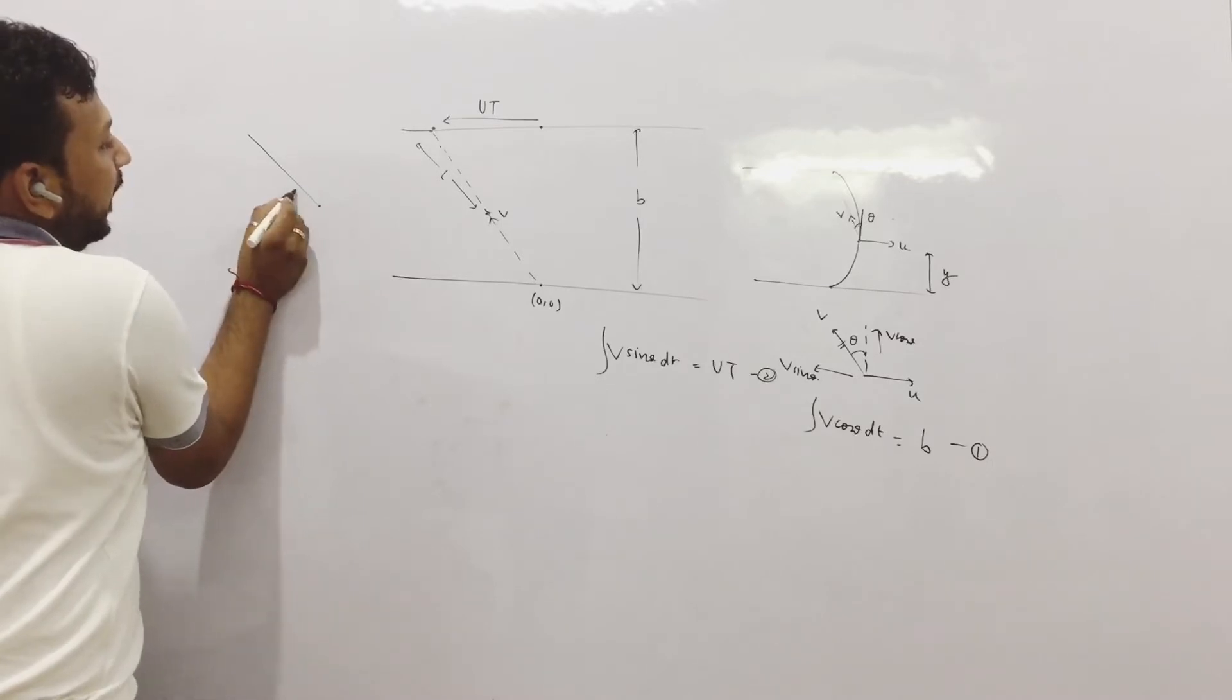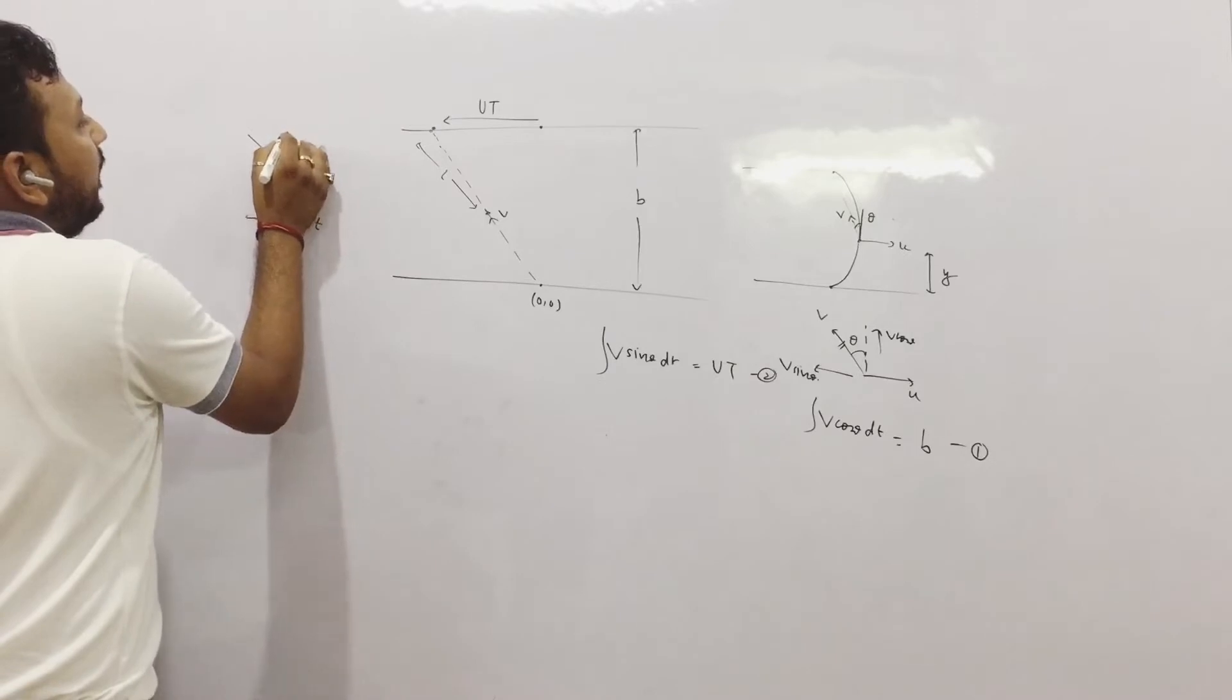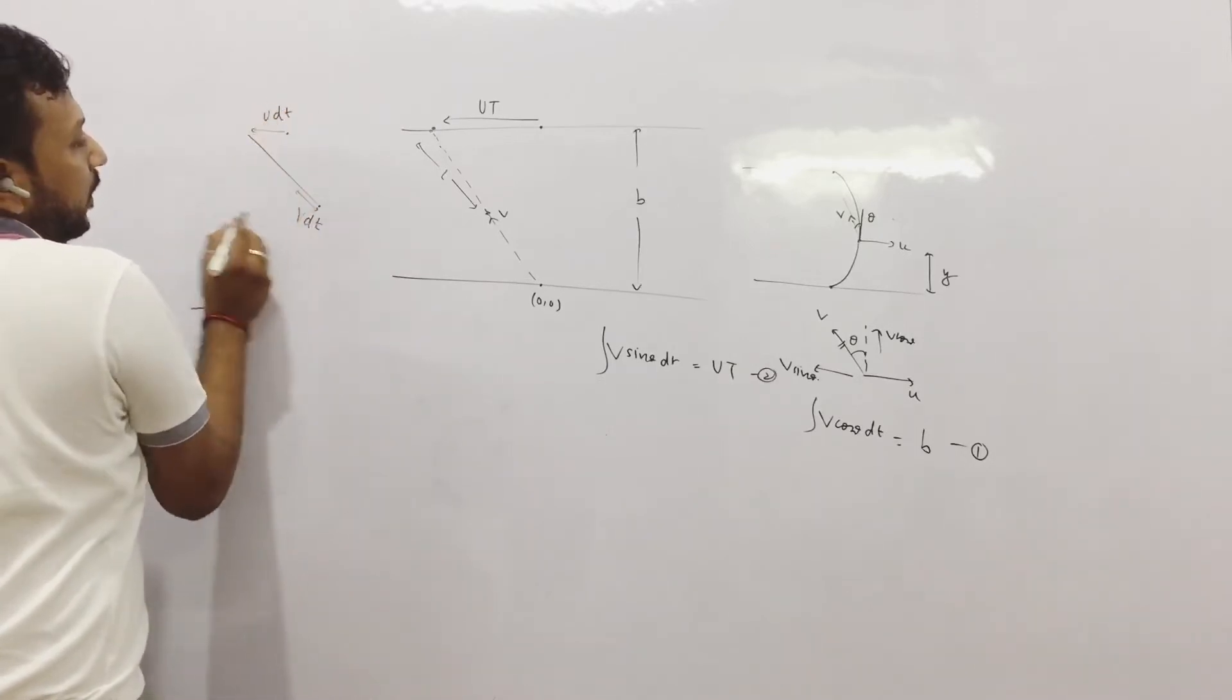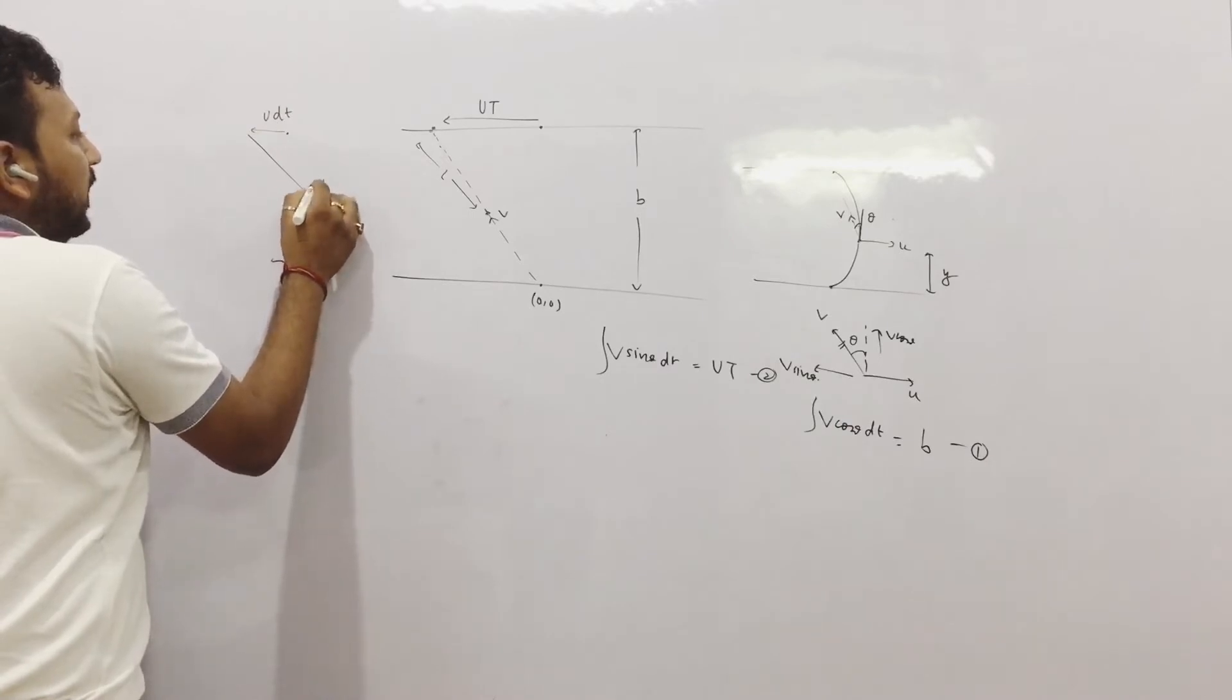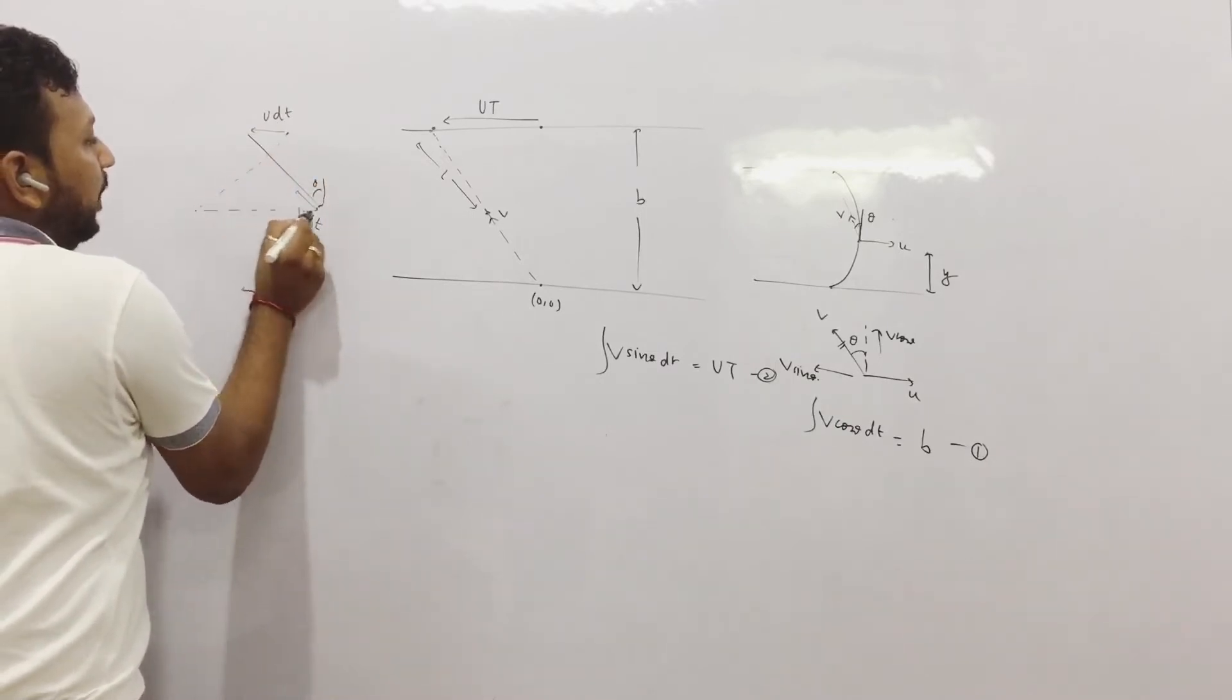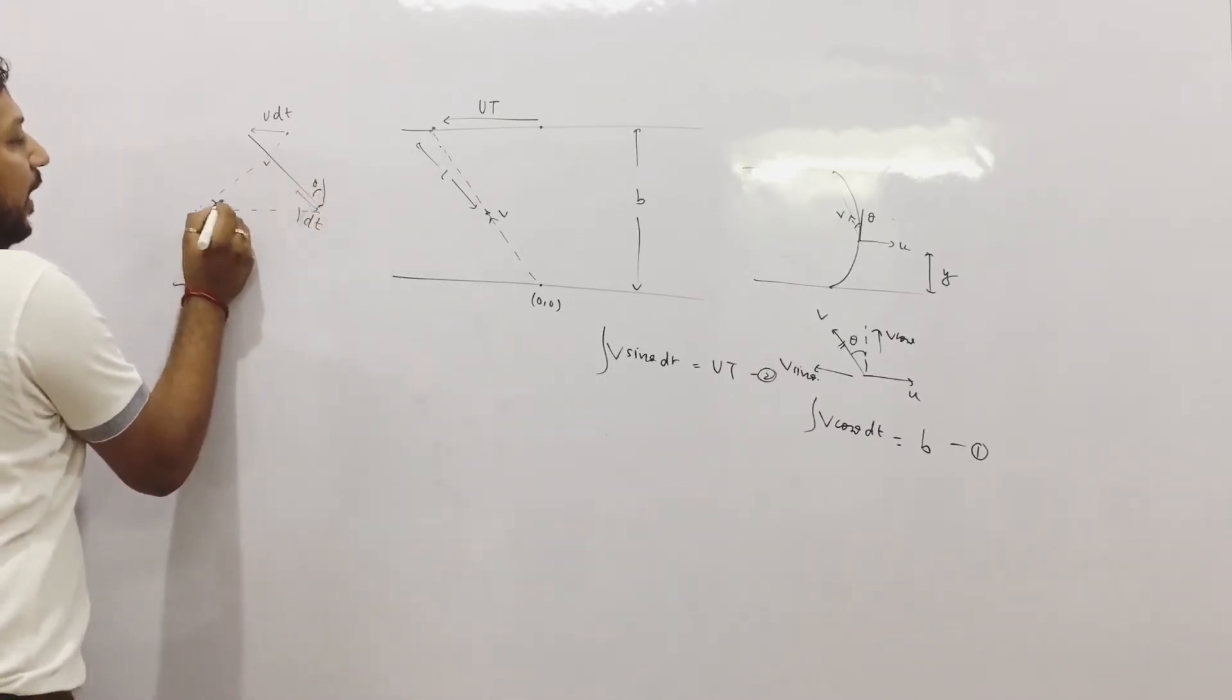In dt time, in dt time, the boat will move v dt. And the point will recede how much? u dt. This angle was theta. So if I draw a perpendicular here, this is 90, this is theta, 90 minus theta and back to theta.